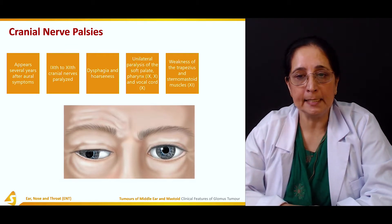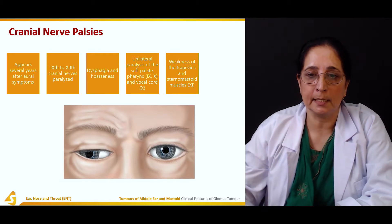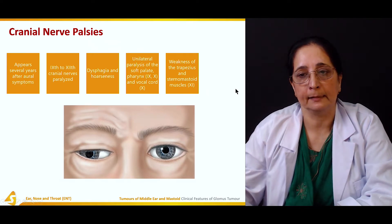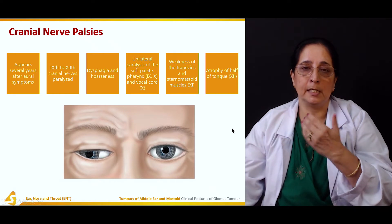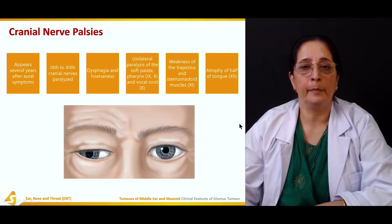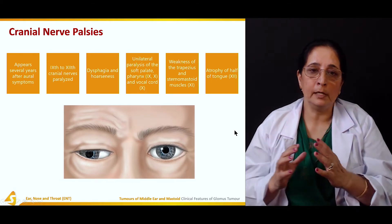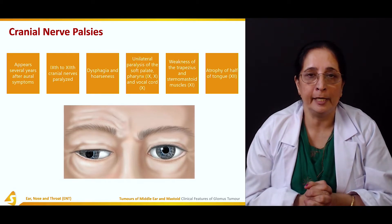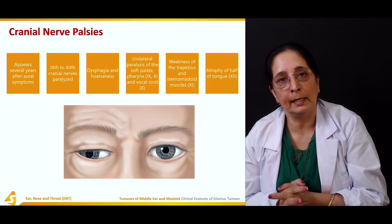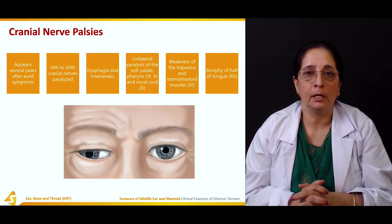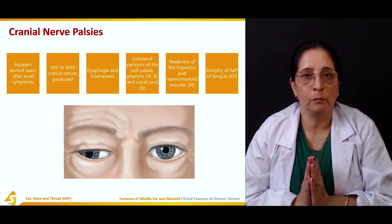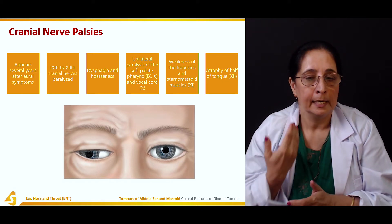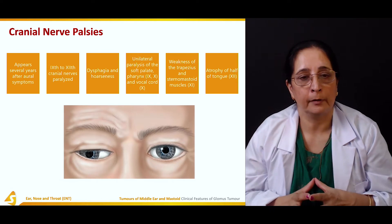Weakness of the trapezius and sternocleidomastoid muscles is present, usually due to involvement of the 11th cranial nerve. Atrophy of the ipsilateral half of the tongue is present due to involvement of the 12th cranial nerve. All these signs are mainly due to involvement of cranial nerves 9th through 12th.